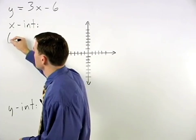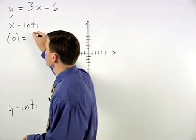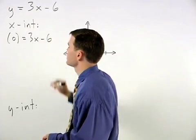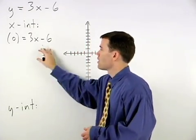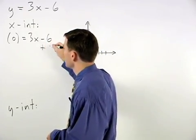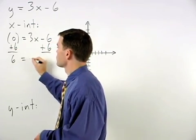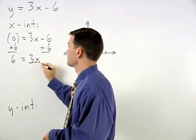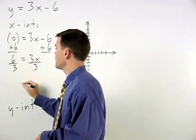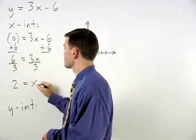And we have 0 equals 3x minus 6. Solving for x, we add 6 to both sides. And we have 6 equals 3x, dividing both sides by 3, 2 equals x.